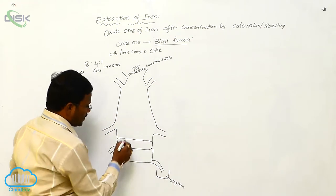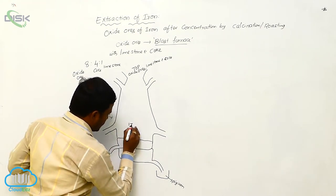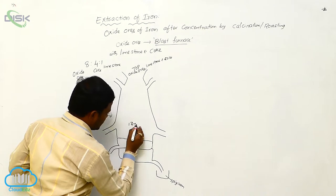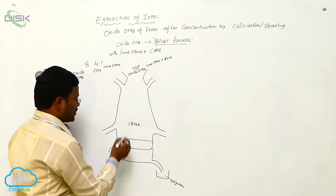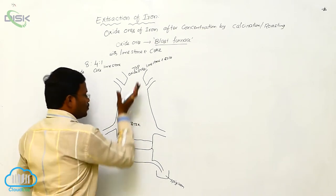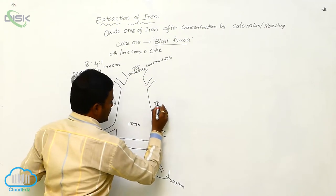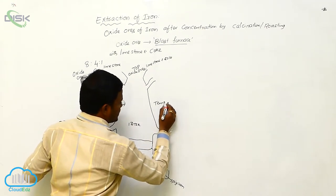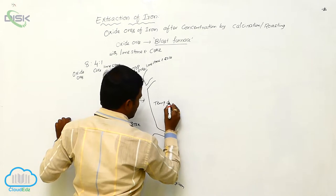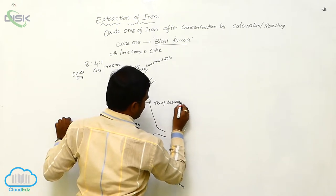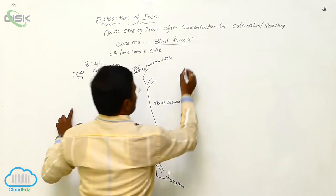Here nearly 1673 degree Kelvin of temperature is observed. From bottom to top, temperature inside the blast furnace decreases. In the first step,